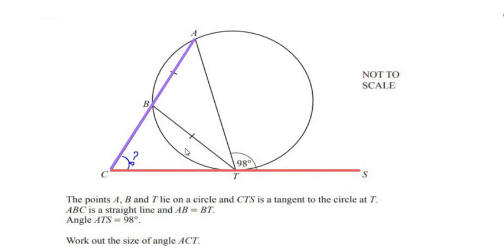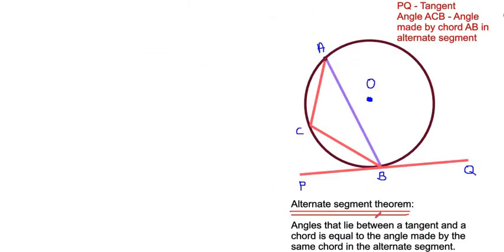To solve this we have to make use of some circle theorems. We can see that CTS is a tangent and AT is a chord to the circle, so the circle theorem we are going to use is the Alternate Segment Theorem. It states that the angle between a tangent and a chord is equal to the angle made by the same chord in the alternate segment.